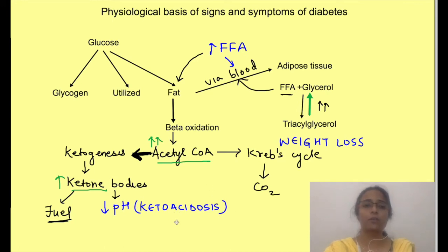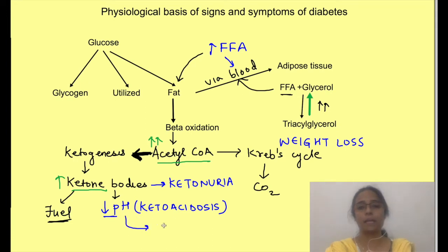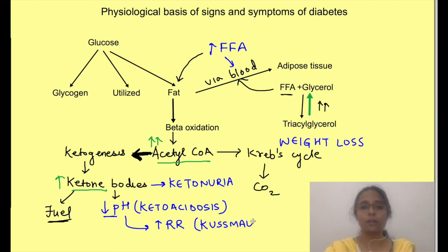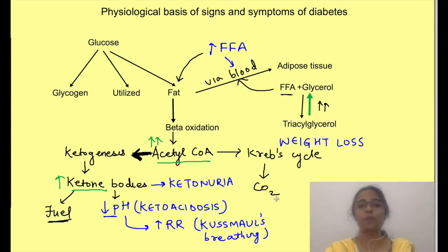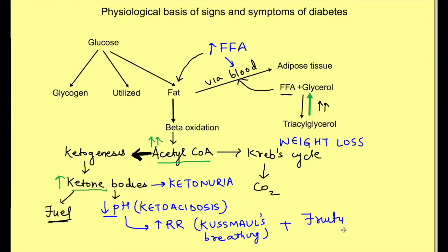These ketone bodies are also excreted in urine, i.e. ketonuria occurs. Since blood pH decreases, the body starts compensatory mechanisms for excretion of excess acid by increasing respiratory rate and depth. This is known as Kussmaul's breathing or air hunger, because respiration is very rapid, deep and labored as if the person is hungry for air. Some ketone bodies, i.e. acetone, are also excreted by breath, causing a fruity smell of breath.